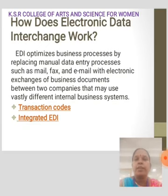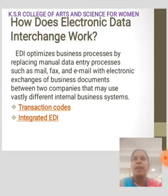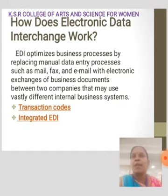How does Electronic Data Interchange work? EDI optimizes business processes by replacing manual data entry processes such as mail, fax, and email with electronic exchange of business documents between two companies that may use different international business systems. Transaction codes: most Electronic Data Interchange transactions start by creating an electronic document based on information from your business systems, spreadsheet, or related transactions. These documents use standardized EDI formats called transaction codes for easy integration and use by many businesses.